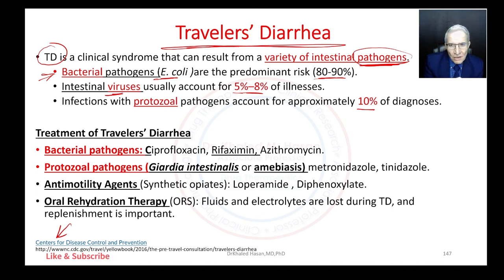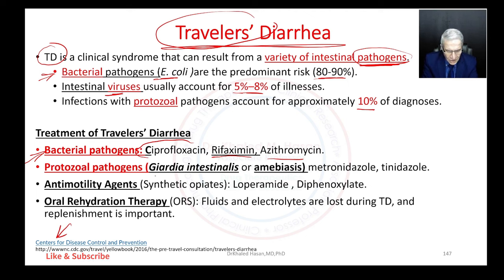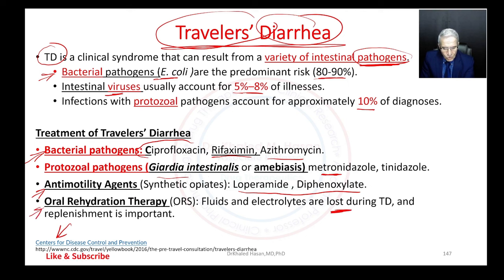For treatment: bacterial traveler's diarrhea is treated with ciprofloxacin, rifaximin, or azithromycin — three antibiotics. Protozoa such as Giardia and amoebiasis are treated with metronidazole or tinidazole. For non-specific diarrhea symptoms, we prescribe anti-motility or anti-diarrheal medications such as loperamide and diphenoxylate. When the patient loses a lot of fluid, we recommend oral rehydration therapy with fluid and electrolyte replacement.